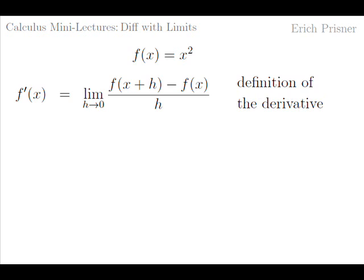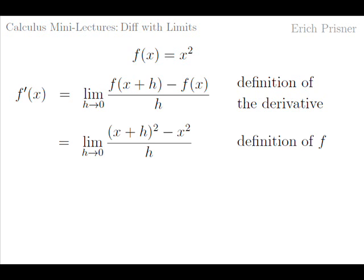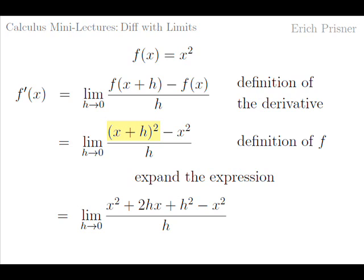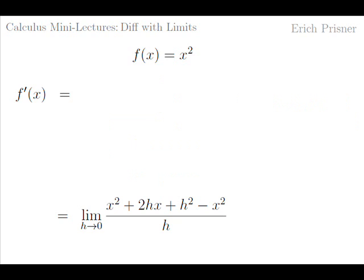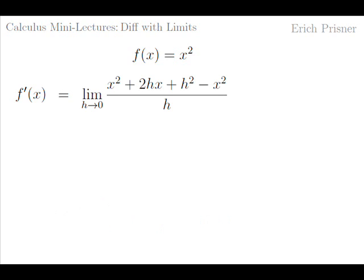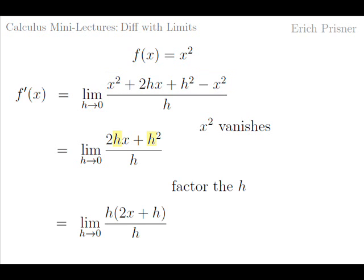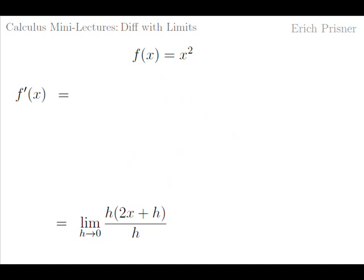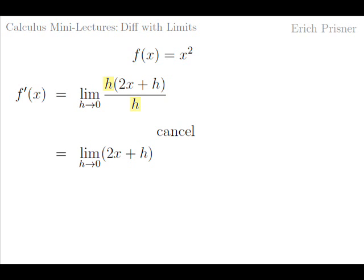This is the definition of the derivative. Now we plug in the definition of f and get the limit of [(x+h)² − x²] divided by h. We expand (x+h)² and get x² + 2hx + h². Note that x² vanishes in the numerator, so we get 2hx + h² divided by h. We factor the h in the numerator, cancel the h, and get 2x + h, and finally we plug in h=0 and get just 2x.